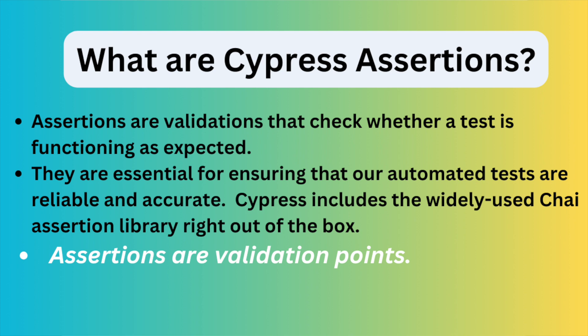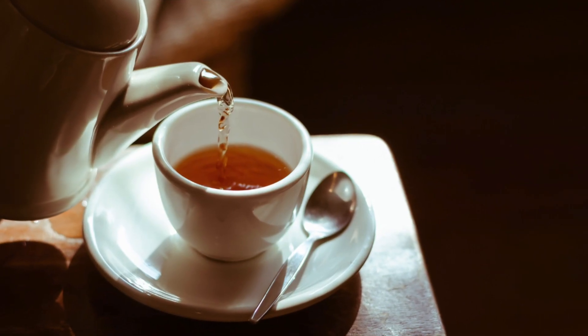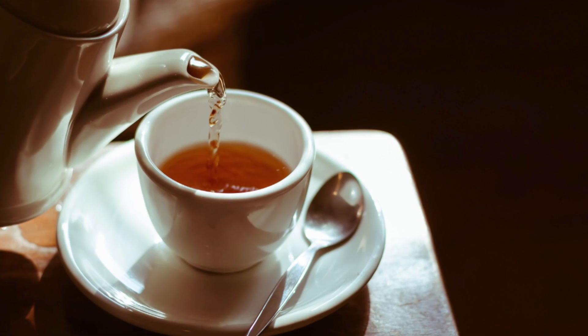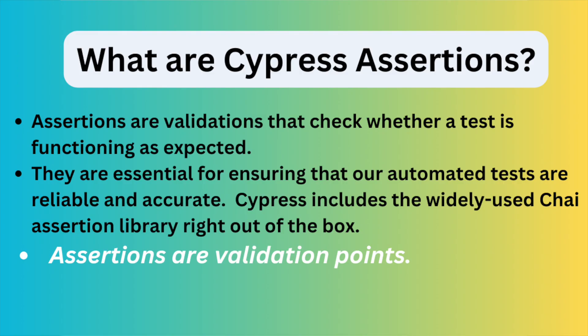What are Cypress assertions? Assertions are validations that check whether a test is functioning as expected. They are essential for ensuring that our automated tests are reliable and accurate. Cypress includes the widely used Chai assertion library right out of the box. If we need to verify some elements are displayed or not, verify page title, enter data in a text box, and so on — basically assertions are validation points.